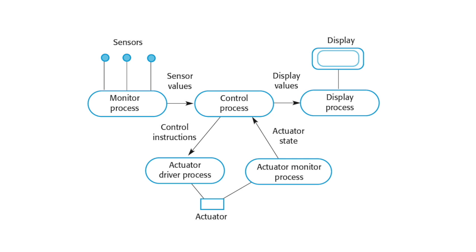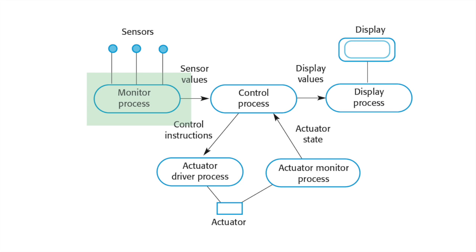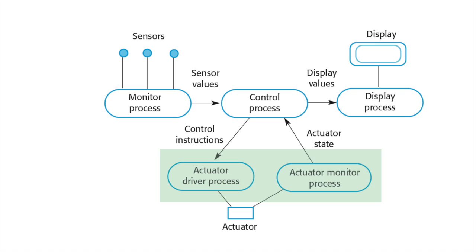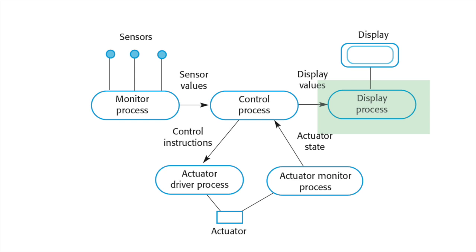This diagram shows the process architecture for the environmental control pattern. There is a monitoring process — and again there may be multiple monitoring processes — which collect data from the system's sensors. This data is passed to the control process, which also takes data from the actuators connected to the system so it is aware of their state. If necessary, the control process sends signals to the actuator control to ensure that the state of the actuators is changed in response to signals from the environment. The display process shows operators or users what's going on.